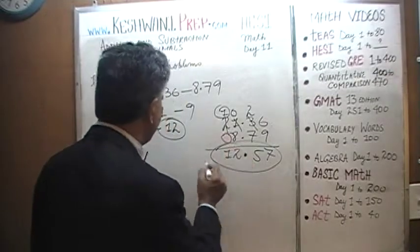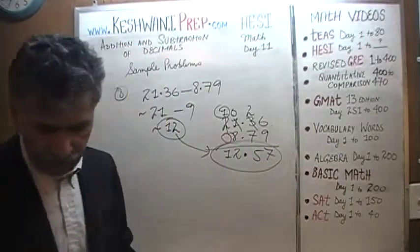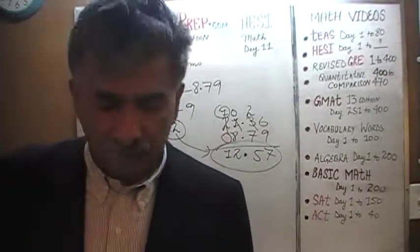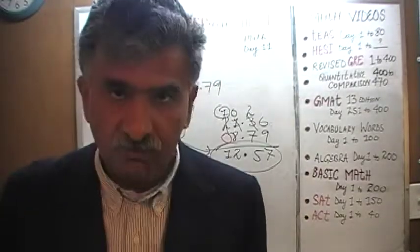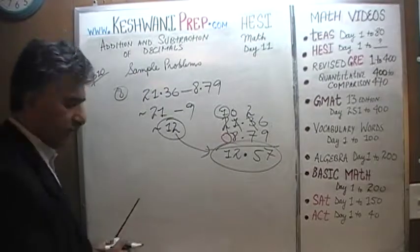And this 1 simply comes down. It's 12.57, which is exactly what we said. It's going to be around 12. So as I keep repeating like a parrot, in the real exam you don't actually have to do it out every single step.